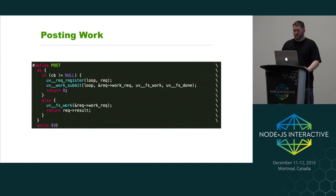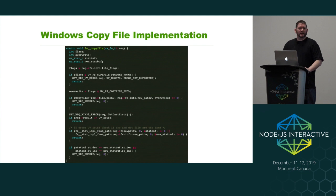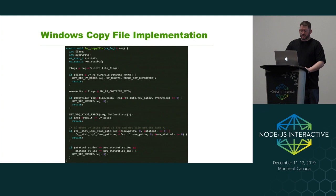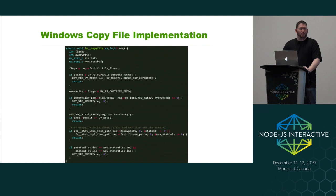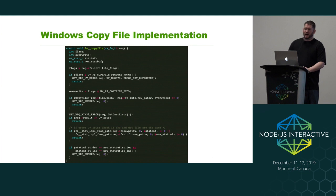This is the Windows internal copy file implementation. We do OS-specific flag validation because certain things supported on Unix and Mac aren't supported on Windows. Then there's the CopyFileW call — an actual Windows API call that handles the copy for you. The rest of the code handles a bug on Windows where it returns EBUSY if you're trying to copy the same source and destination — we try the copy, if it fails with EBUSY we stat both files, and if they're the same we know the operation actually succeeded and it's not a genuine error. From there we go back up the stack: exit the thread pool, back to the binding layer, back up into JavaScript.